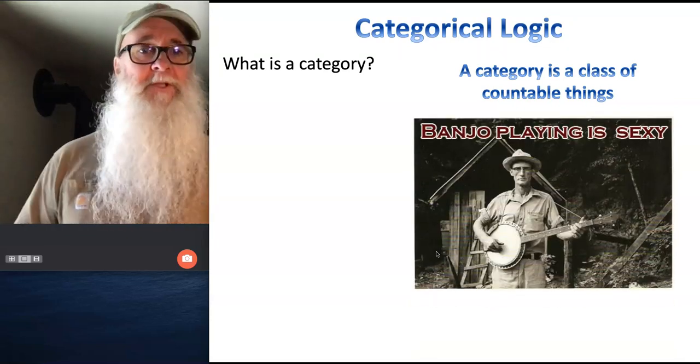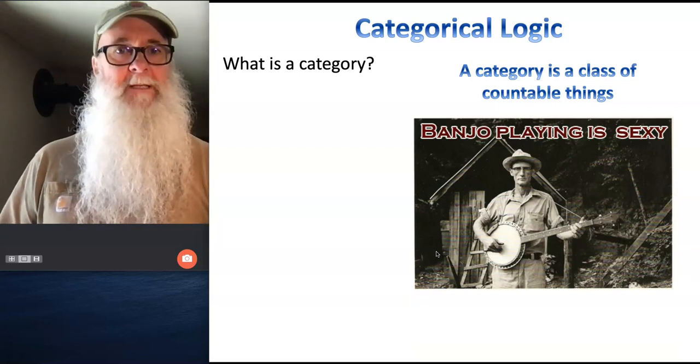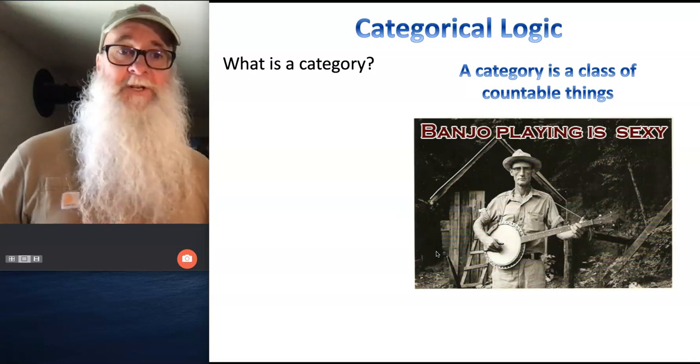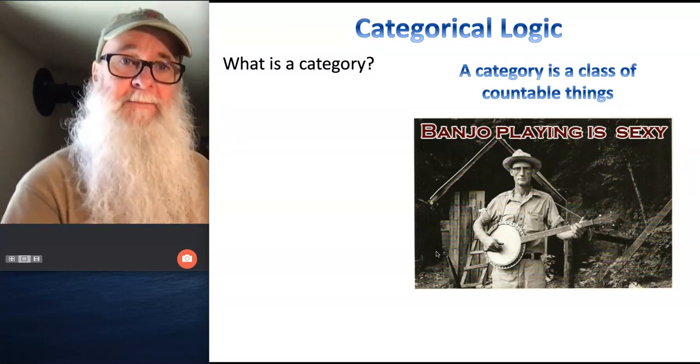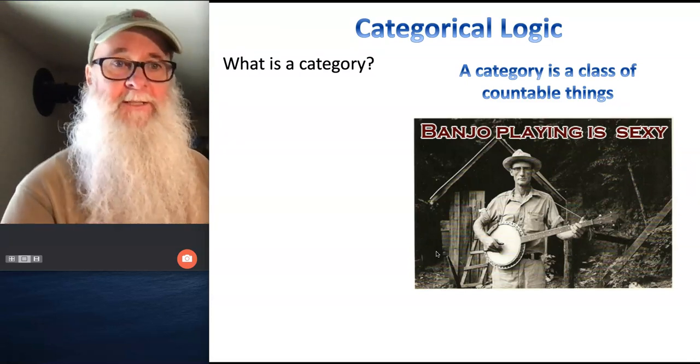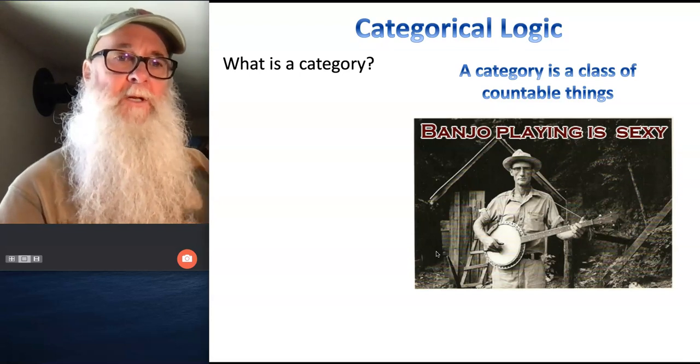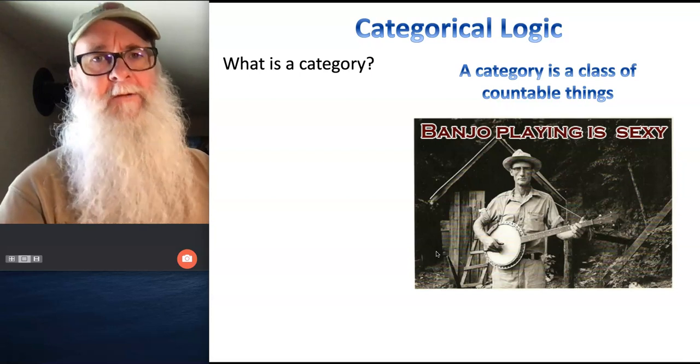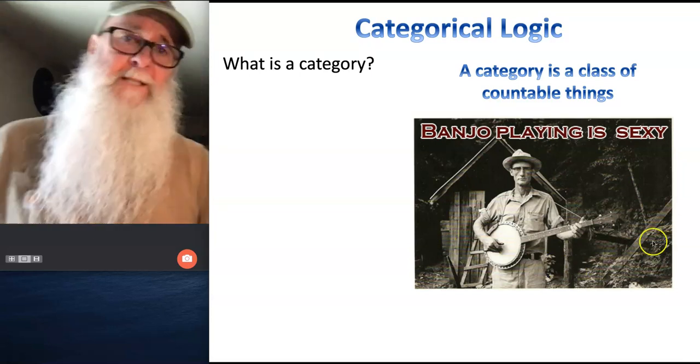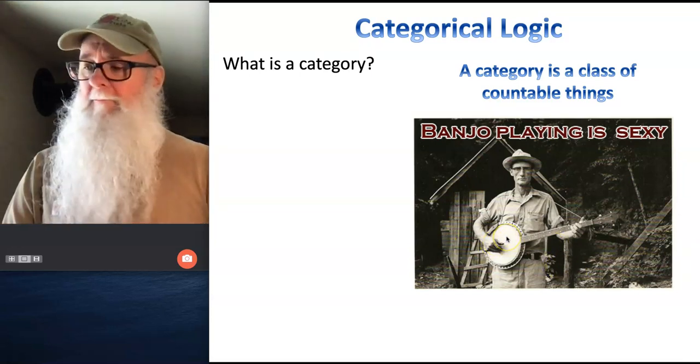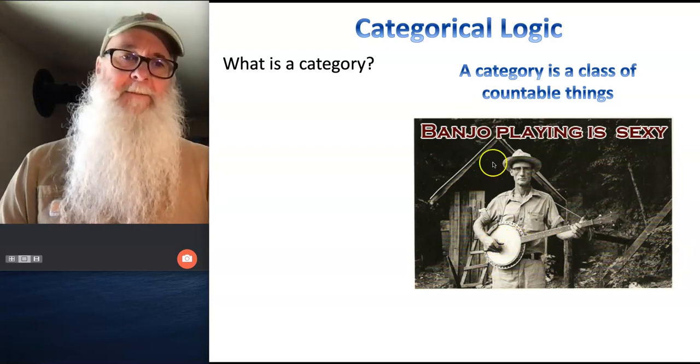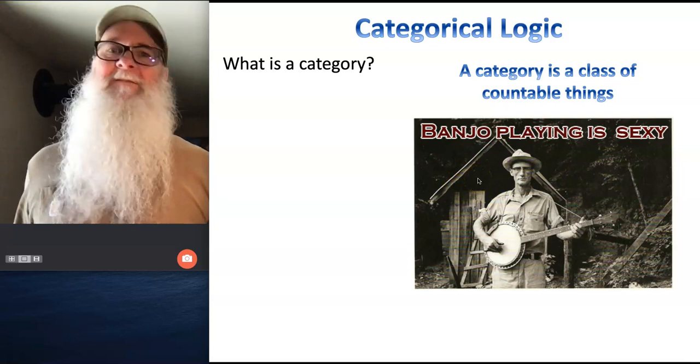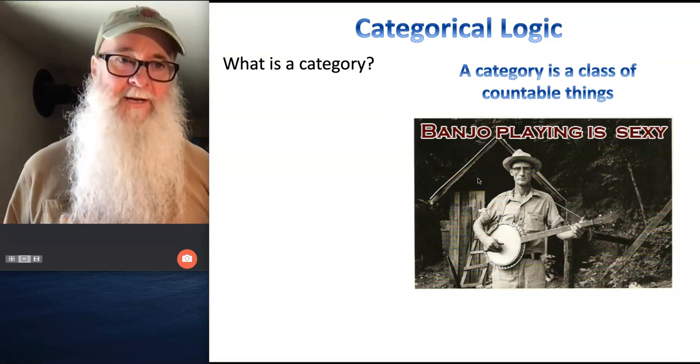So for example, when you look at this image, there's things that are countable, like banjo strings. There's five of them. You see there's a certain number of hats in this image. There's a certain number of people in this image. So when we're dealing with categorical logic, we always want to be focused on things that we can count, things that we can count and categorize. There's things in this image that you see, but you can't count. For example, I see brown in this image, but brown is not countable. I can't have five browns. I see this word sexy. Sexy is not countable.